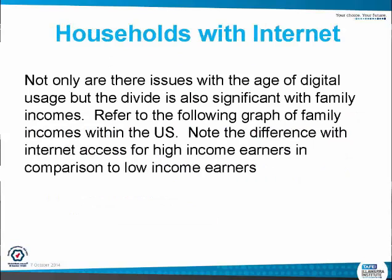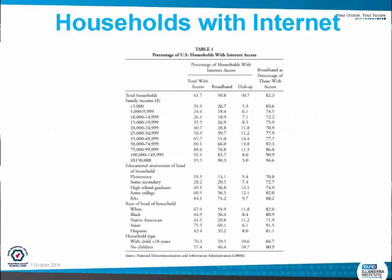Not only are there issues with the age of digital usage, but the divide is also significant with family incomes. Refer to the following graph of family incomes within the US. Note the difference with internet access for high income earners in comparison to low income earners — family income earners below $5,000 is 32%, whereas $150,000 or over is 95.5%. That's a massive difference, showing how the digital divide is making things more polarized.